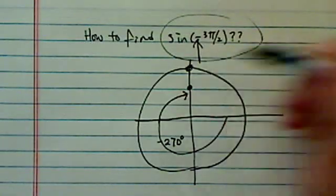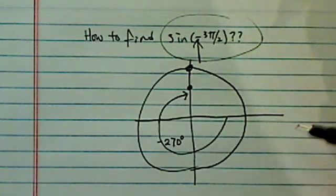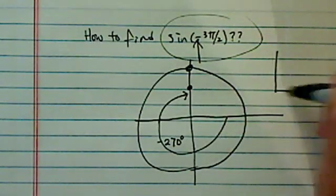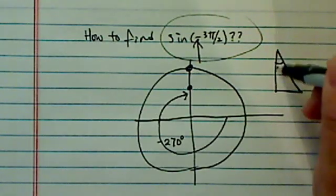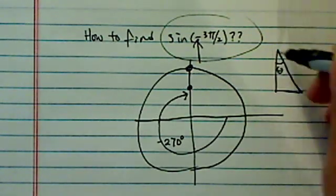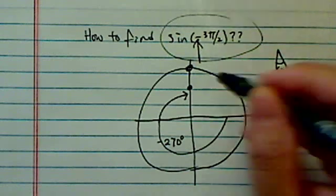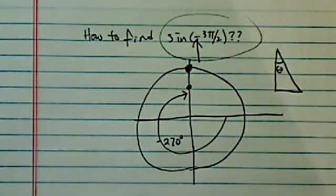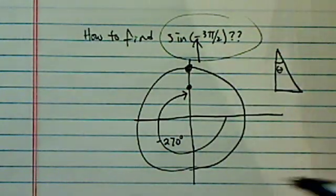So the question is, how do we find sine of this angle? Because typically, when we have a right triangle, we see sine of theta is opposite over hypotenuse, but in this case, at 90 degrees, there's no hypotenuse to speak of, so what do we do?